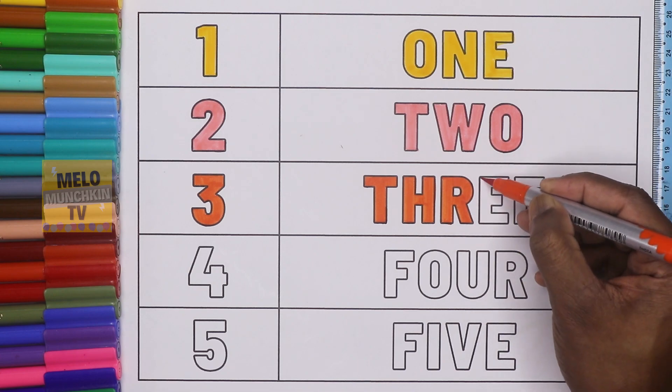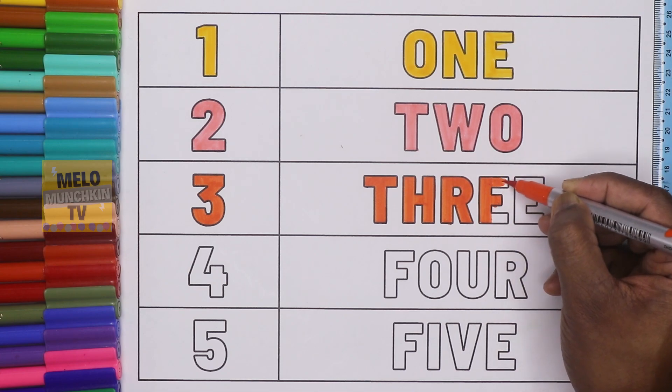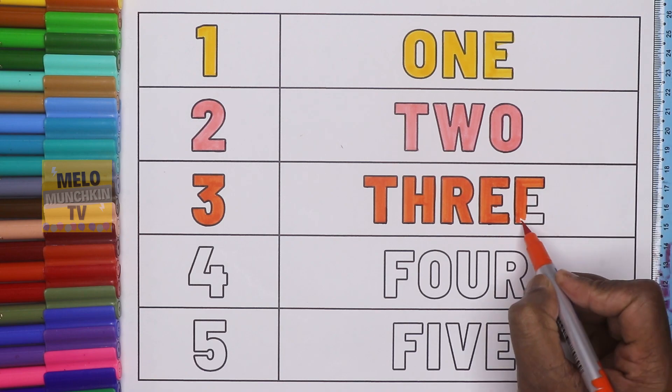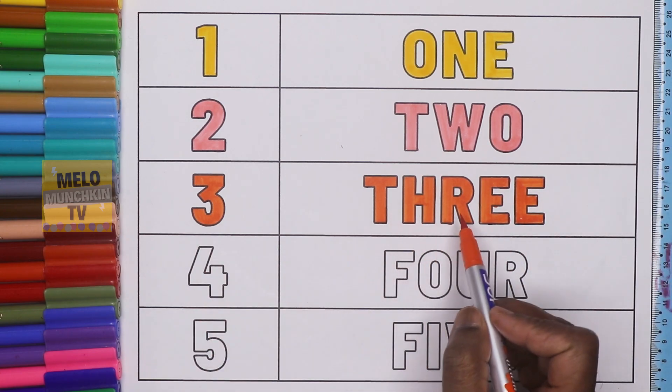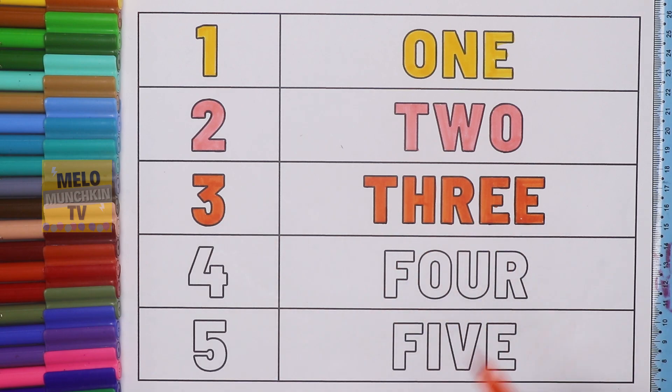T-H-R-E-E, 3, T-H-R-E-E, 3, and this one is orange color. Next I'll take green color, this is light green color, and I'll use this color to color number 4, F-O-U-R, 4.